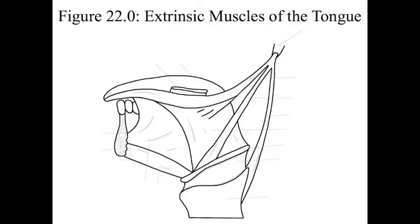Figure 22 is the extrinsic muscles of the tongue. These are the muscles that move the tongue.